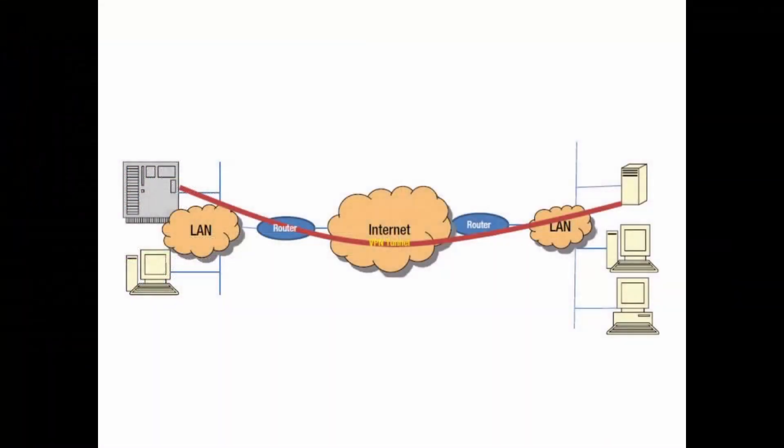The host-to-host VPN involves two hosts participating in an encrypted line of communication, with the encrypted tunnel established directly between the two hosts. Before data transmission, the user is authenticated and the encryption keys are exchanged between the two parties. The advantage of this type of VPN connection is that it allows the user to connect to a specific network source securely, even if they may not have access to any other resources within the network. Unfortunately, using a VPN may also slow down your connection and certain sites may block users attempting to connect via VPNs.